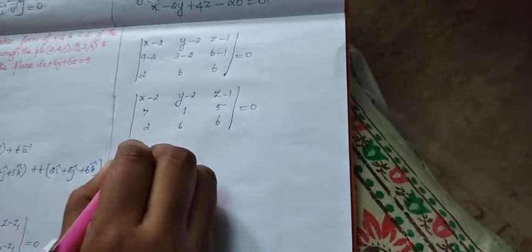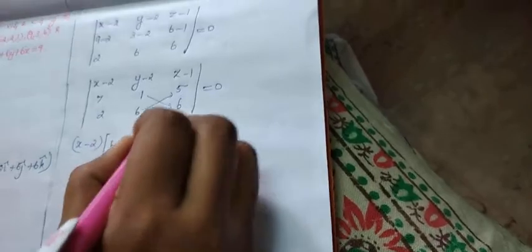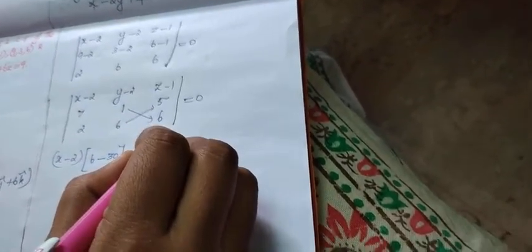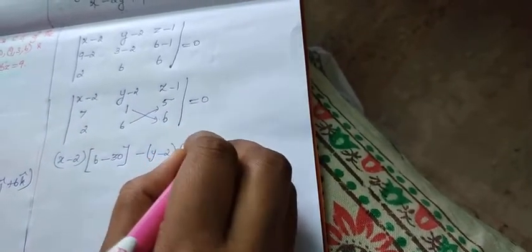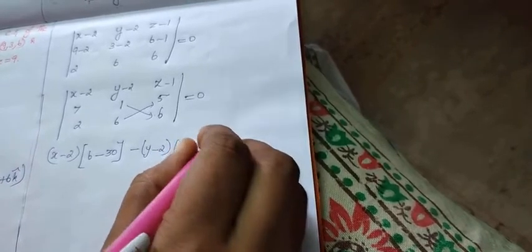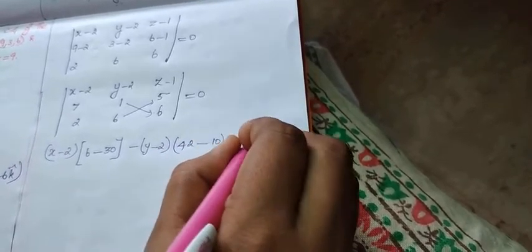(x minus 2) into, now our answer is (1 into 6 is 6 minus 6 fives are 30) minus of (y minus 2) into, what is our (y minus 2)? (y minus 2) into (7, 6 are 42 minus fives are 10).